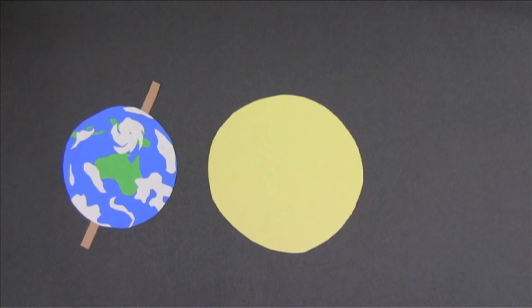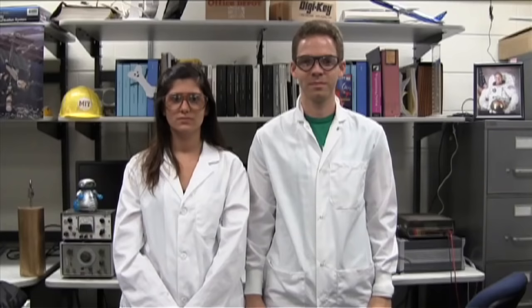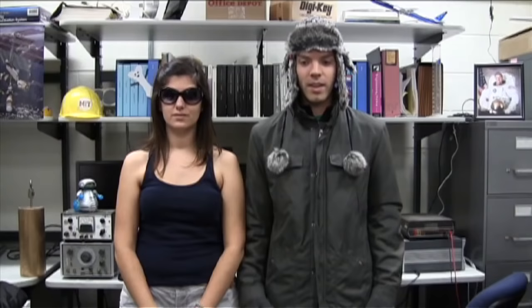So, let's put it all together. When the Northern Hemisphere is tilted towards the Sun, it's receiving direct sunlight. It feels warmer, which means it's summer there. And the Southern Hemisphere is receiving indirect sunlight, which means it feels cooler. That's winter.